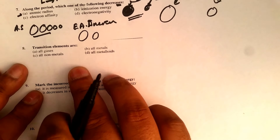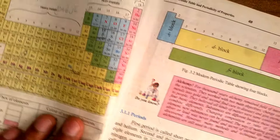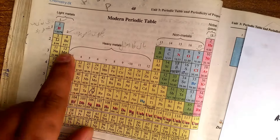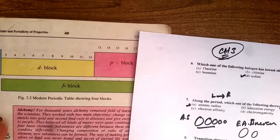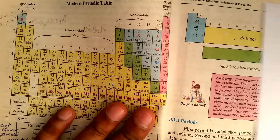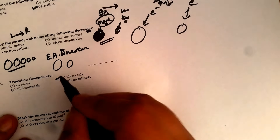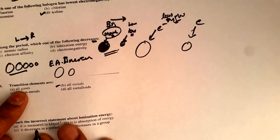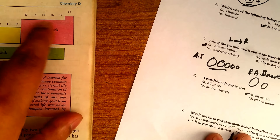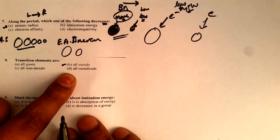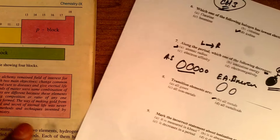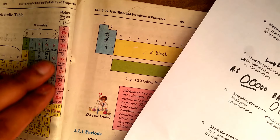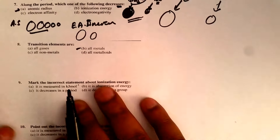Now let's talk about transition elements in the periodic table — these are all the d-block elements, and they are all metals. You also need to memorize metalloids, which you will find in the p-block. Noble gases are also in the p-block at the top. Looking at the blue part of the periodic table, those are all non-metals.